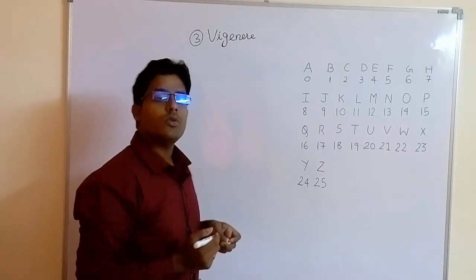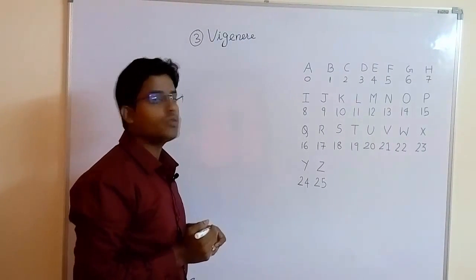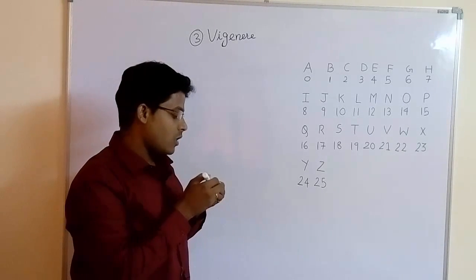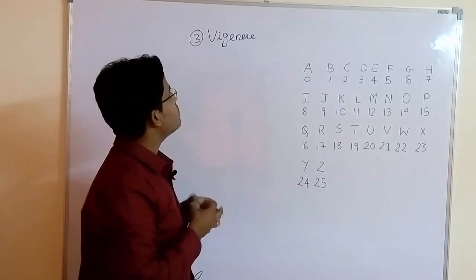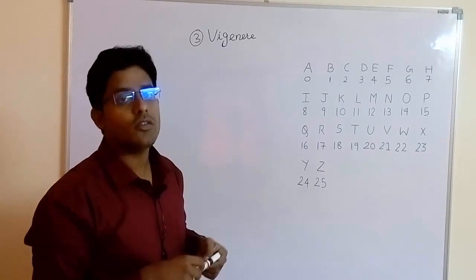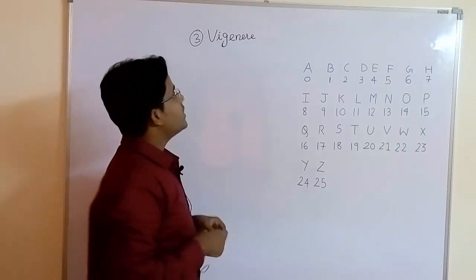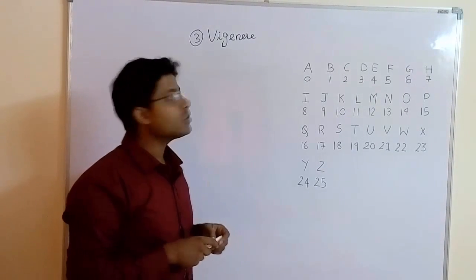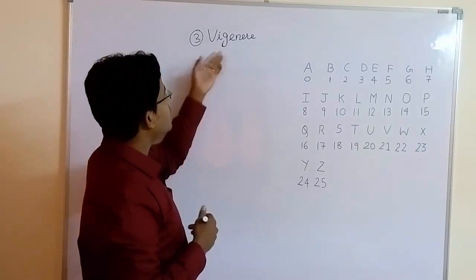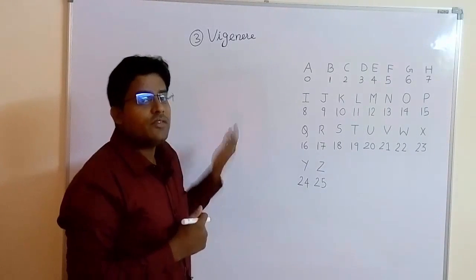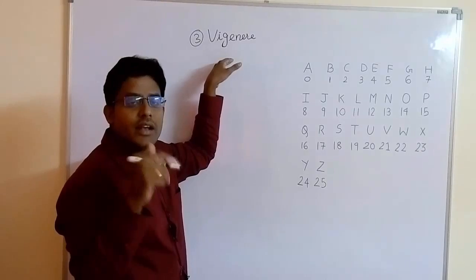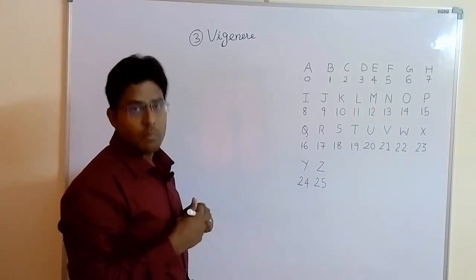In this video I am going to show you how to do encryption using Vigenère cipher method. To solve the example using Vigenère cipher method you need to take the help of the Vigenère table. It is also called Vigenère tabulae. So we draw the Vigenère table first, then we will see the method how to do encryption and decryption using this method.